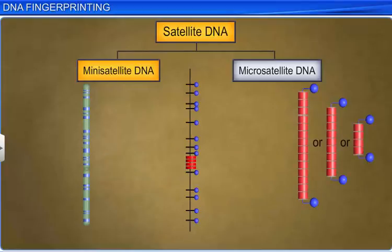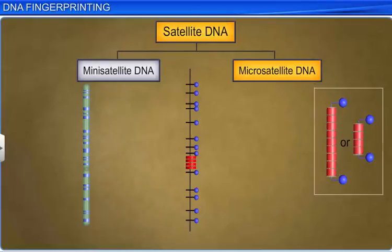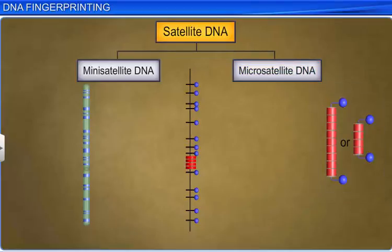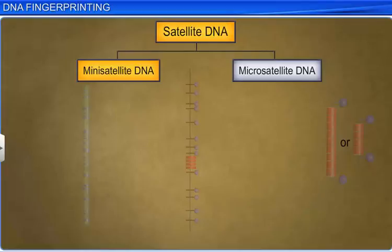On the other hand, micro-satellite is a section of DNA which has tandem repeats of shorter sequences of 2 to 10 base pairs. Both mini-satellite and micro-satellite DNA act as molecular markers in the DNA fingerprinting technique.